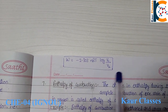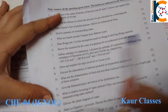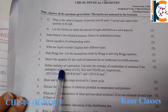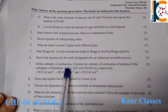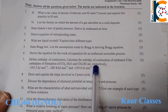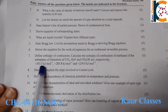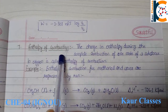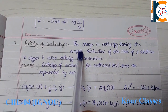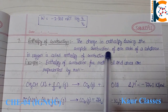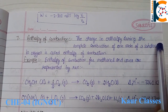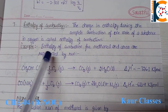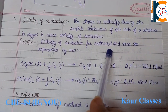Next, question number 7: define enthalpy of combustion and calculate the enthalpy of combustion of methanol using the given enthalpy values. First, the definition: the change in enthalpy during the complete combustion of one mole of a substance in the presence of oxygen is called the enthalpy of combustion.